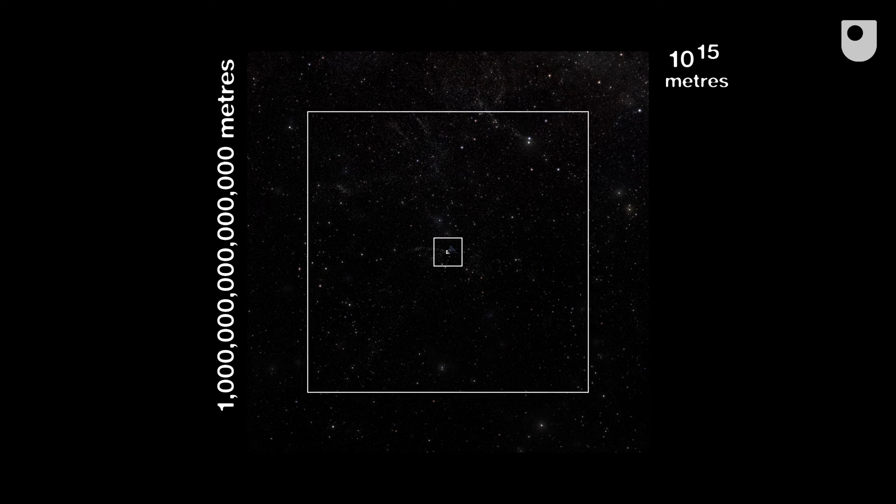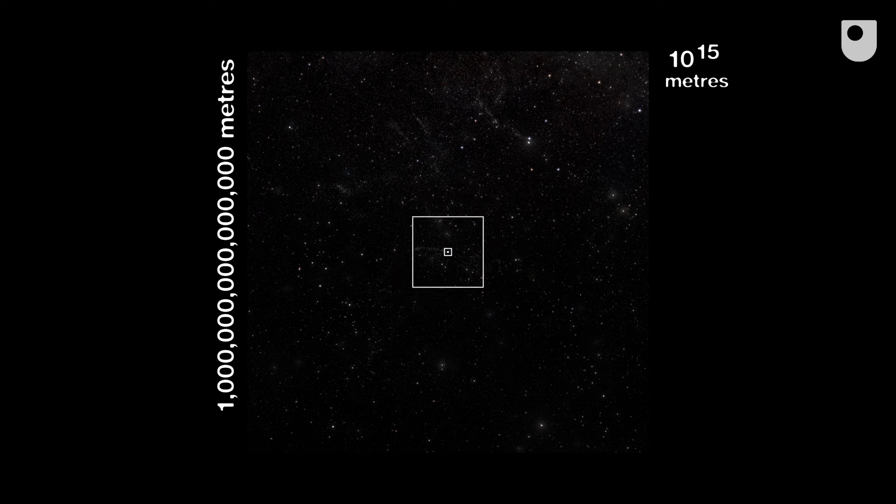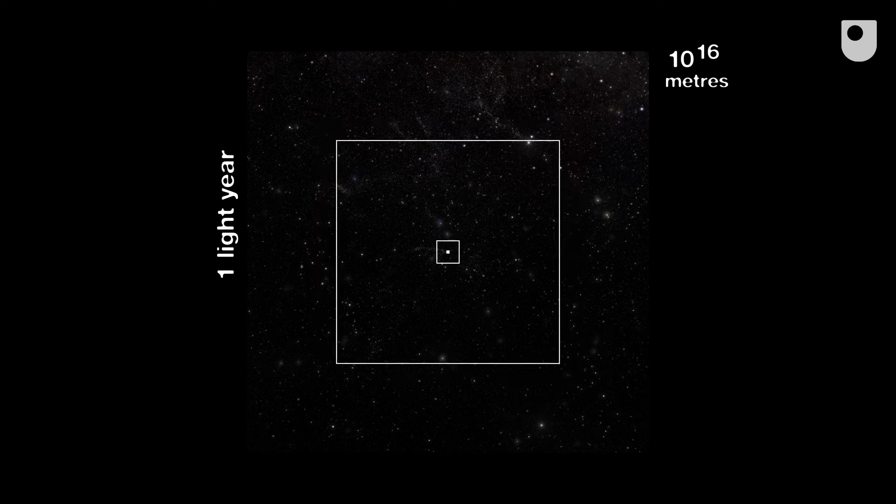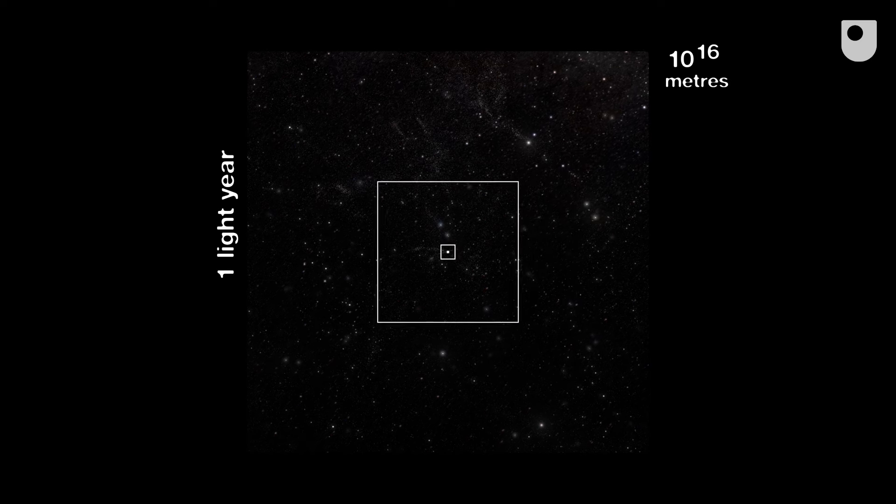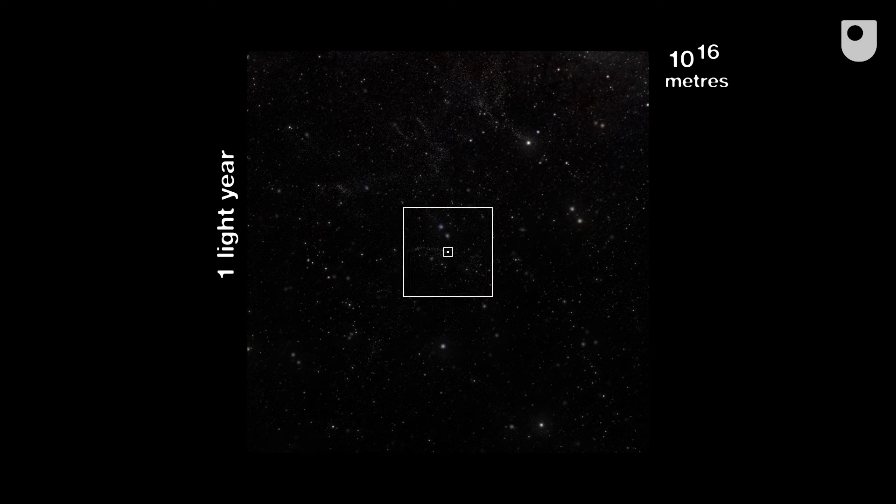We're heading into interstellar space. Our Sun is just one of billions of stars, and still at this distance, the night sky looks very similar to what we see at home. This square is ten to the sixteen metres. The distance light travels in one year. One light year.